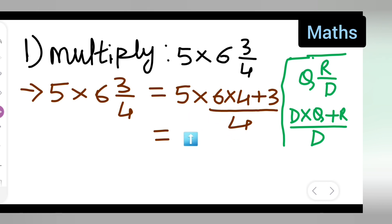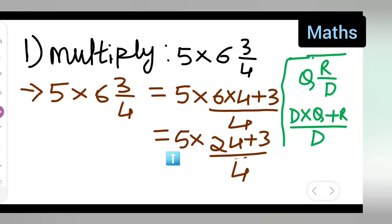So 5 multiplied by - write down 5 as it is - multiplied by 6 times 4, so you will get 24 plus 3 upon 4. Now this is equal to 5 multiplied by 24 plus 3, which gives you 27, so 27 upon 4.